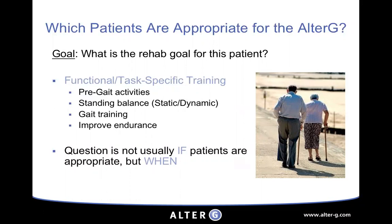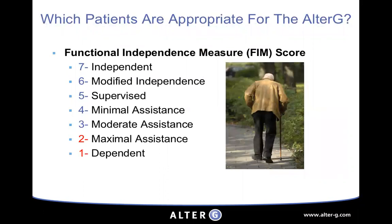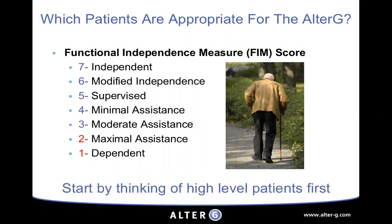Looking at FIM scores, we recommend patients be at least a three or higher — moderate assistance or above. Once you get down into max assist or dependence, it's much more challenging to get them in and out of the anti-gravity treadmill. If they're max assist, consider whether they should be working on standing outside in parallel bars first. If they're more mod assist with better motor control and can position their lower extremities well, they'd be great for the anti-gravity treadmill. Start with higher level patients first.